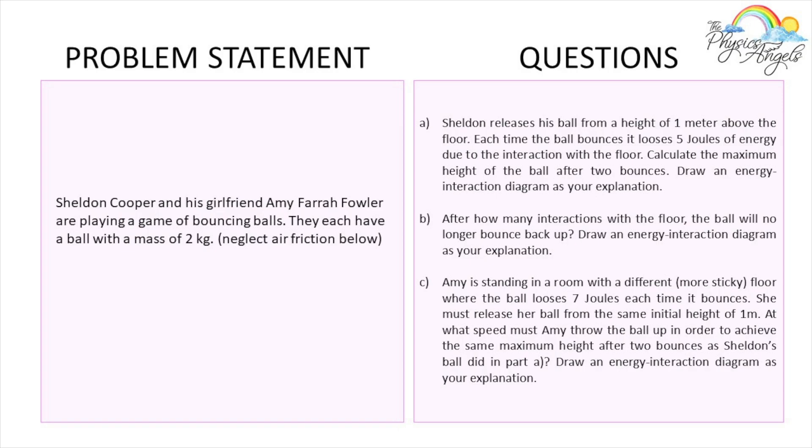So this is the problem we're going to be working on today — it's a Big Bang Theory problem. Sheldon Cooper and his girlfriend Amy Farrah Fowler are playing a game of bouncing balls. They each have a ball with a mass of 2 kilograms. Neglect air friction. For part A, Sheldon releases his ball from a height of 1 meter above the floor. Each time the ball bounces, it loses 5 joules of energy due to the interaction with the floor. Calculate the maximum height of the ball after 2 bounces.